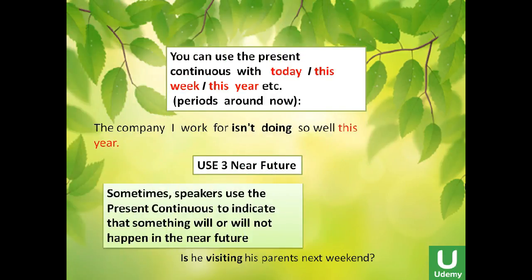Maybe she's learning today, and also tomorrow, and so on — not just right now. You can use the present continuous with time expressions like today, this week, this month, this year — periods around now. For example: 'The company I work for isn't doing so well this year,' meaning the company is not doing well during this period.